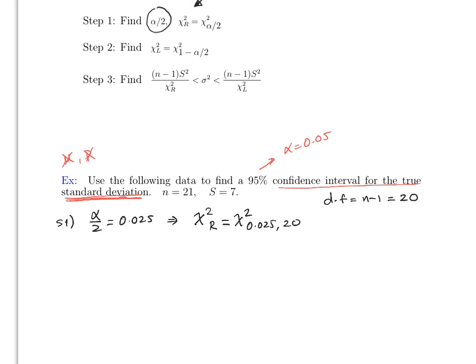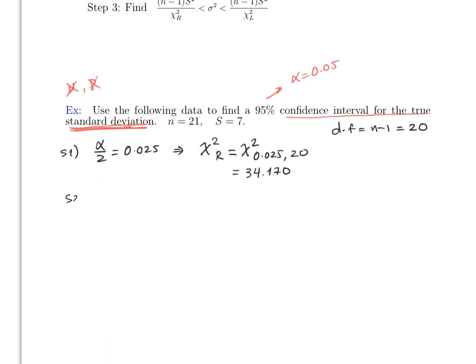Looking at the table, chi-square right equals 34.170. For the left side, chi-square left is chi-square of 0.975 — remember this value plus 0.025 must add to 1. The degrees of freedom remain 20. Therefore, chi-square left equals 9.591.